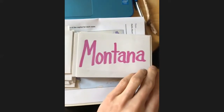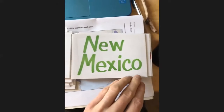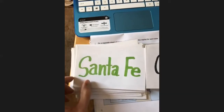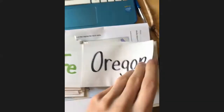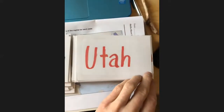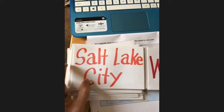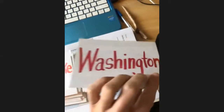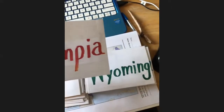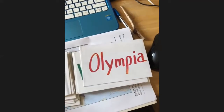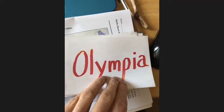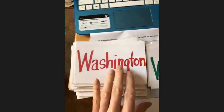Idaho — Boise. Montana — Helena. Nevada — or Nevada — Carson City. New Mexico — Santa Fe. Oregon — Salem. Utah — Salt Lake City. Washington — Olympia. Again, that's Washington state. Some of them I gave the state and you gave the capital, and some the other way, so if I say one, you say the other.